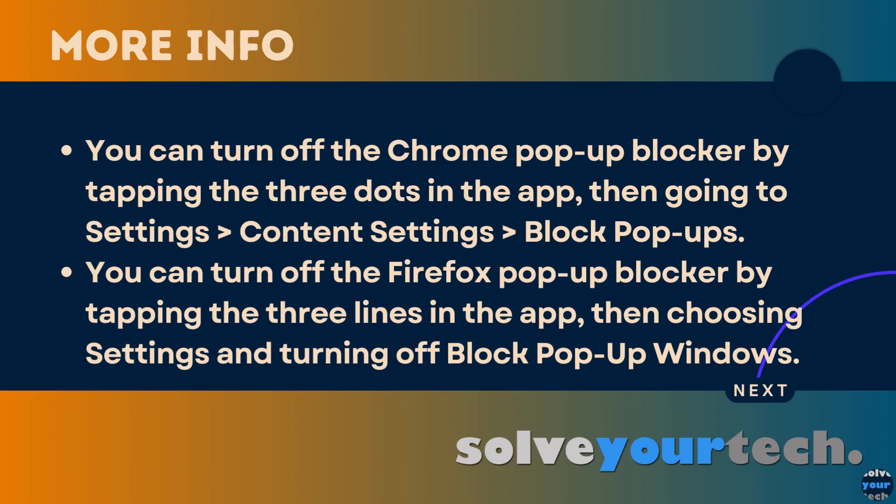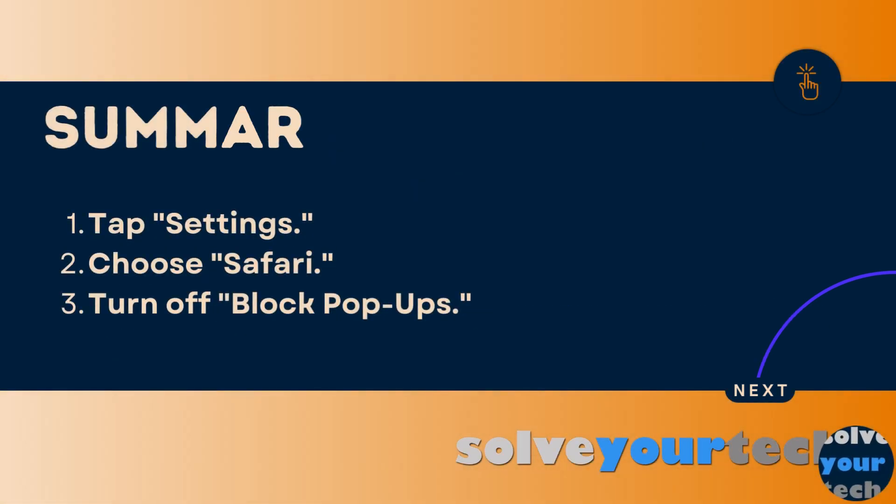The iPhone Firefox browser has a similar setting. To change it there, open the Firefox app, tap the button with three horizontal lines, choose Settings, then tap the button next to Block Pop-up Windows to disable it.